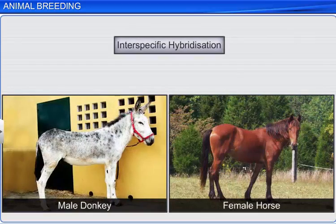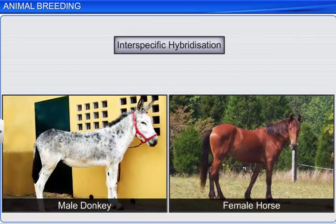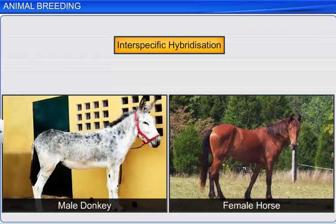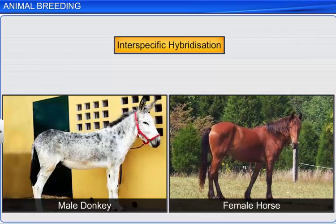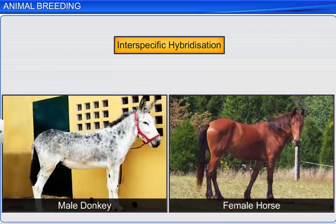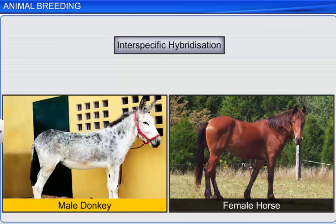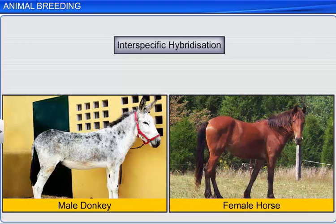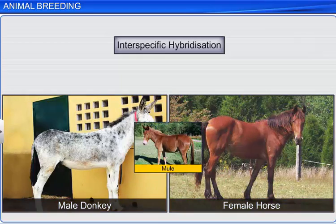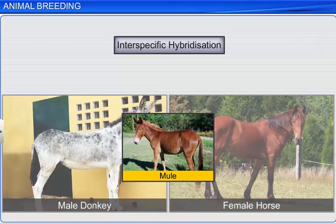The third type of outbreeding is interspecific hybridization, where animals of two different species are mated. For example, mating between a male donkey and a female horse to form a new breed, a mule. Although most new breeds produced this way are infertile, they have high economic value.